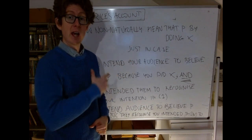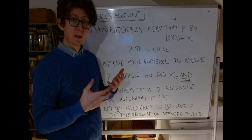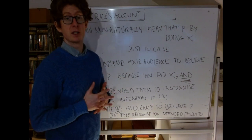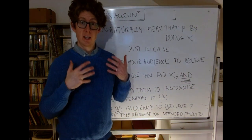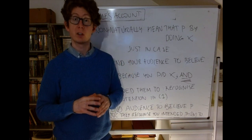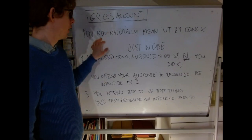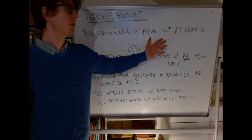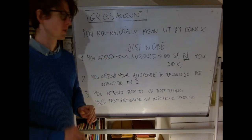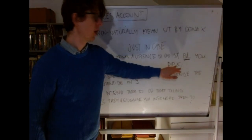A big question is: how might we alter the account to cover cases where speakers do mean things by saying or doing certain things, but they're not telling you that something is the case? Grice does actually say something about this in the article. He gives a more general definition of what it is to mean something by doing something. Here is Grice's more general account: you non-naturally mean something by doing some action X just in case three conditions hold, which are slightly more general versions of the conditions from before.